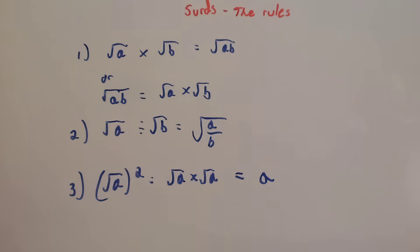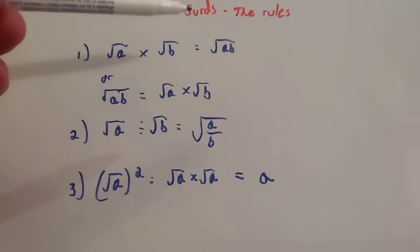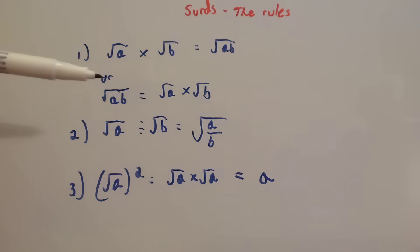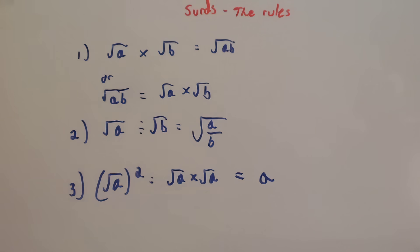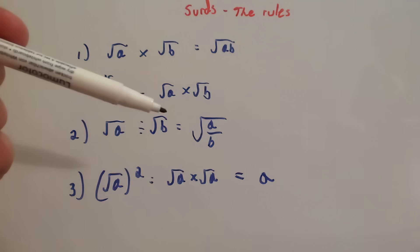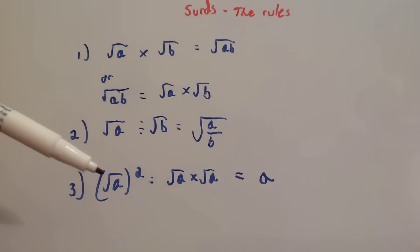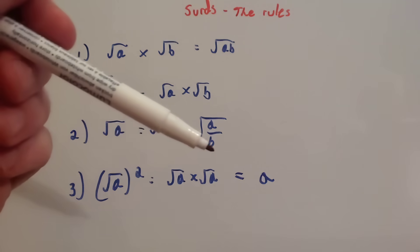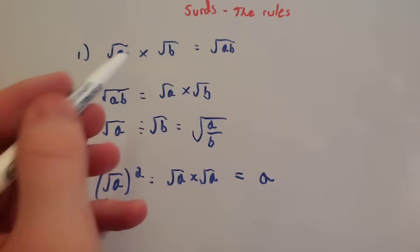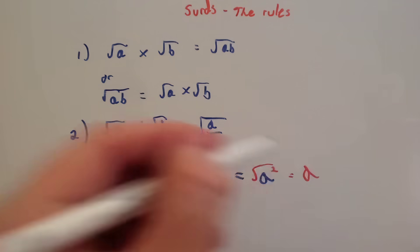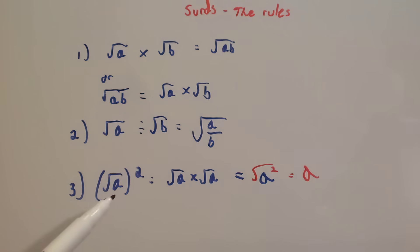These are the rules you're going to use whenever you're working with surds. First of all, root A times root B is equal to root AB. So if you multiply two surds, you can write it as a single surd of AB. Also, whenever you simplify a surd, you use the reverse — if you've got root AB, you can write that as root A times root B. Root A divided by root B is equal to root A over B. Root A squared — using rule 1, root A times root A is root A squared, and whenever you square root something squared, you're left with A. So whenever you square a surd, you just get the number that was originally under the square root sign.